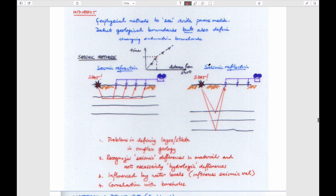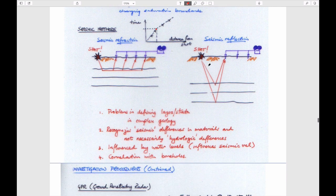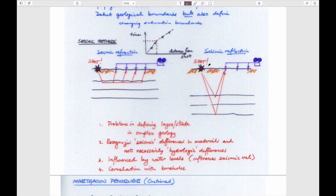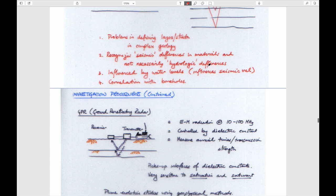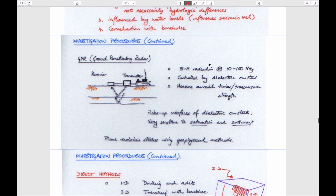The advantage of seismic methods is you can cover a big volume quickly and relatively inexpensively, but you don't know it absolutely because there's judgment involved. Something with a seismic velocity of 2,000 meters per second could be sandy soil or clay soil — very different hydrologic properties — so it doesn't necessarily answer all the questions you might be interested in.